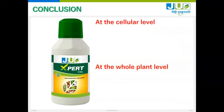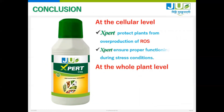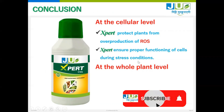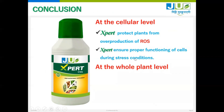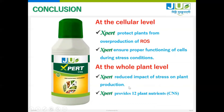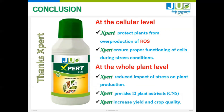We can conclude how EXPERT is effective at the cellular level. EXPERT protects plants from over production of ROS and ensures proper functioning of cells during stress conditions. EXPERT reduces the impact of stress on plant production and provides good nutrition — that is why we call it CNS. EXPERT increases yield and improves crop quality, giving the farmer both more yield and better quality. Thanks to EXPERT for helping achieve what farmers need. Thanks a lot.